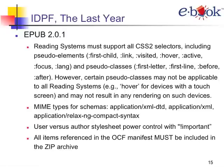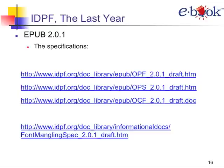These are the current versions of the standards — what everybody should be coding their publications to for EPUB 2.0.1. Those are the three standards plus an informational document on font mangling.